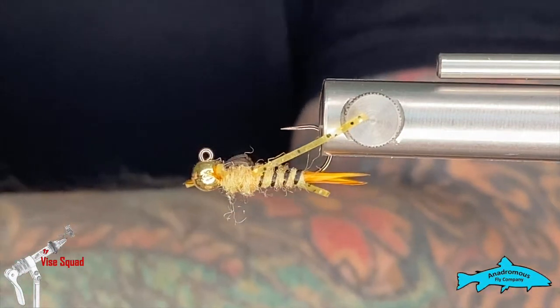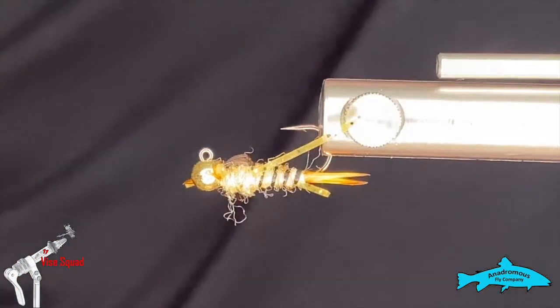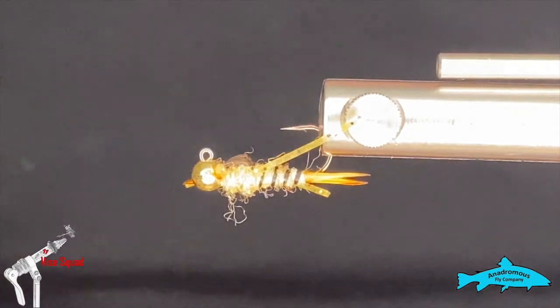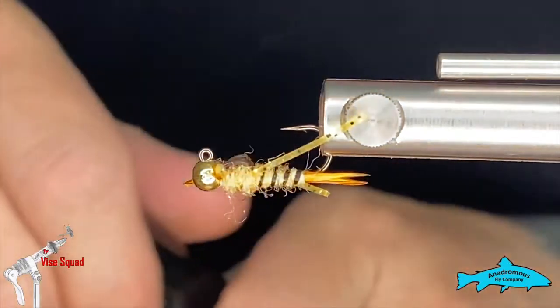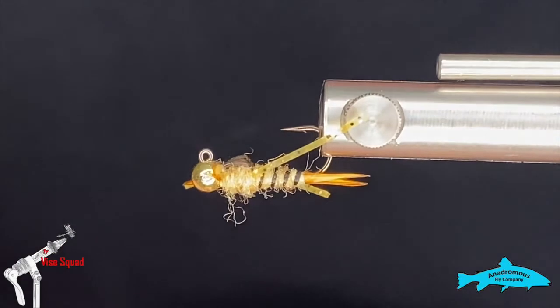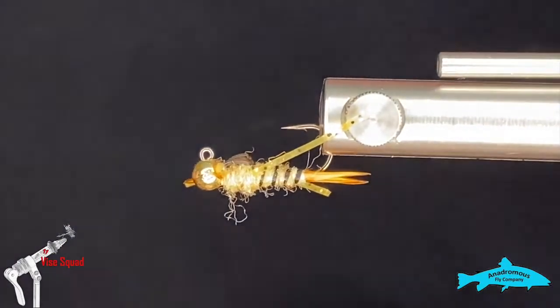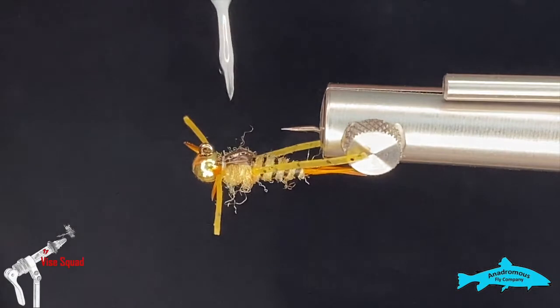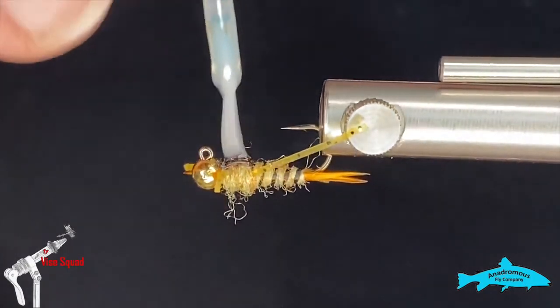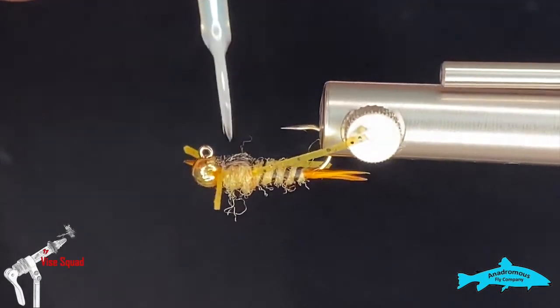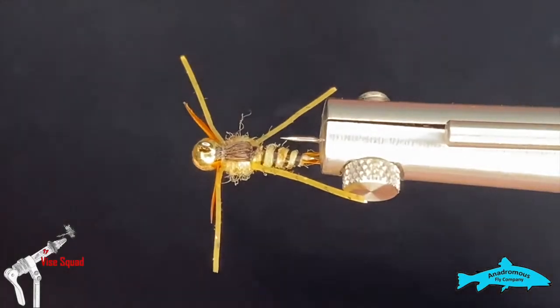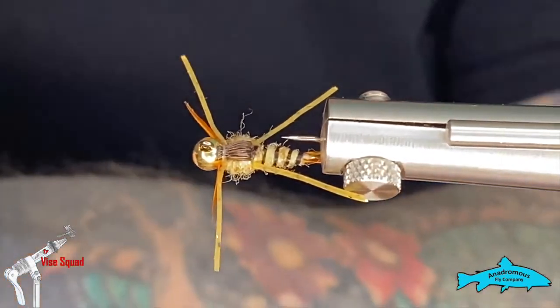The last thing we're going to do is grab some Solarez Bone Dry - I can find it on my bench here somewhere - and we'll just coat that wing case in it and our thread wraps just to make sure everything stays together. Like so, and we'll hit it with the light and that'll be that.